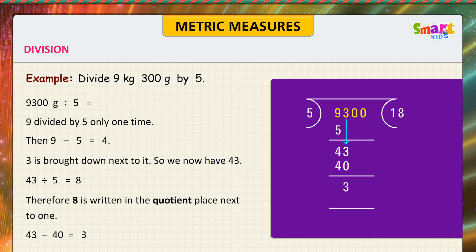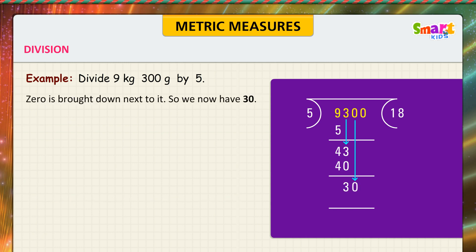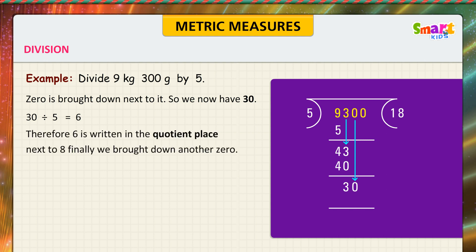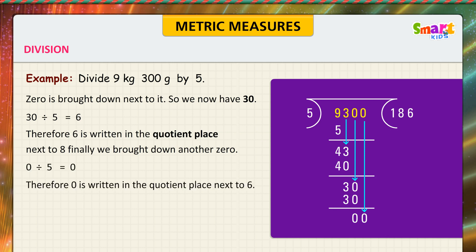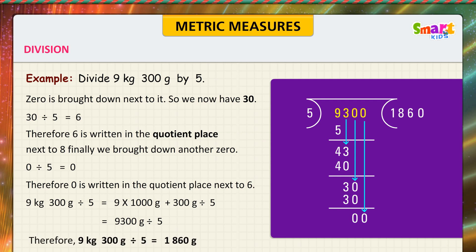Bring down 0 next to 3, giving 30. 30 divided by 5 is equal to 6; 6 is written in the quotient next to 8. Bring down another 0; 0 divided by 5 is equal to 0, written in the quotient next to 6. Therefore, 9 kilograms 300 grams divided by 5 equals 9 times 1000 grams plus 300 grams divided by 5, which is 9300 grams divided by 5, equal to 1860 grams.